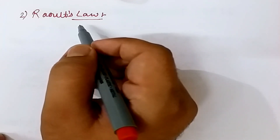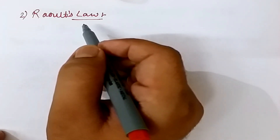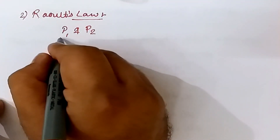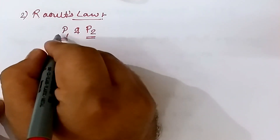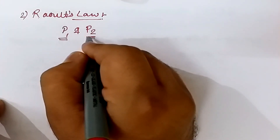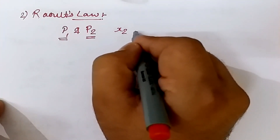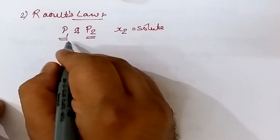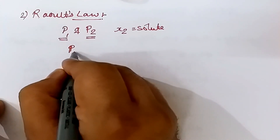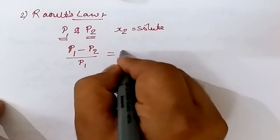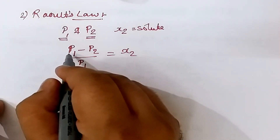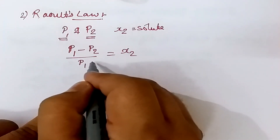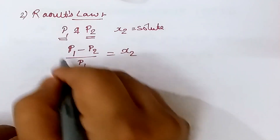Raoult's law states that the relative lowering of vapor pressure is equal to the mole fraction of solute. If p₁ is the vapor pressure of the pure solvent and p₂ is the vapor pressure of the solution, and x₂ is the mole fraction of the solute, then the relative lowering of vapor pressure is given by (p₁ - p₂)/p₁ = x₂.